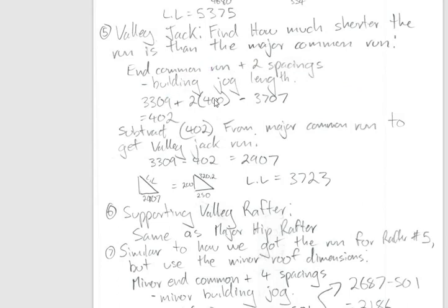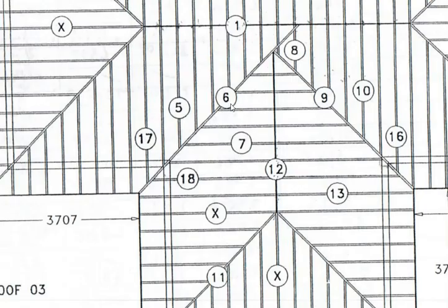We tally up the two spacings plus the run, then subtract the building distance, finding the difference taken off of the run of the rafter. Taking the common plus two spacings minus the building jog gives us what's left over. Taking that off the run we get 3723 or 2907, and then we put that into our common ratio triangle.